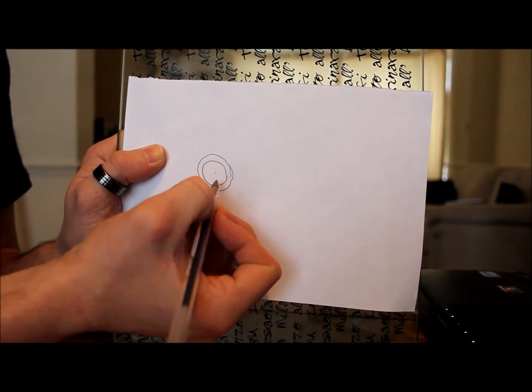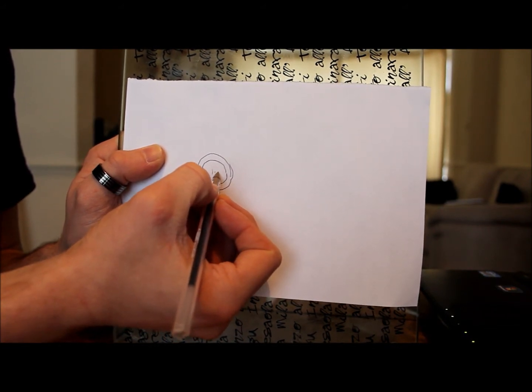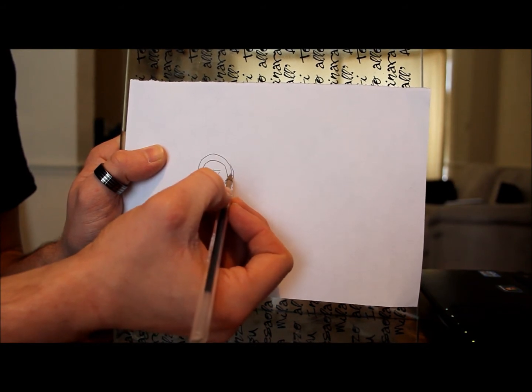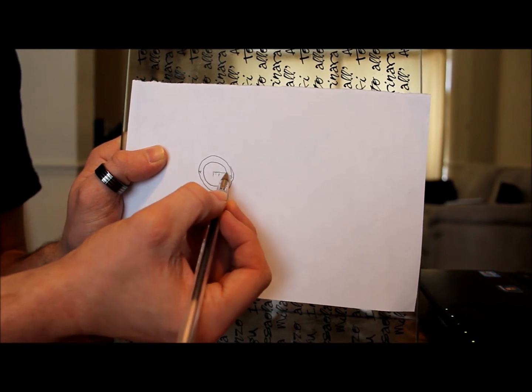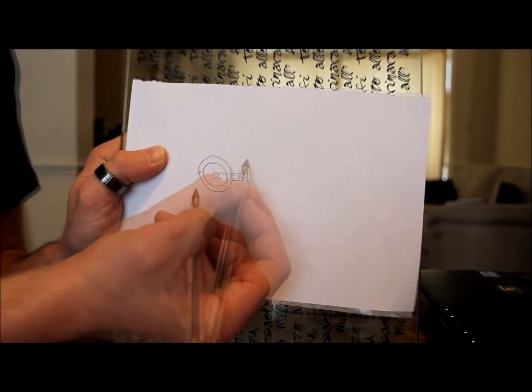Find the center. And then from there, what you want to do is measure the diameter of the outside circle you just made. And then with that measurement, draw a line like that. Good stuff.